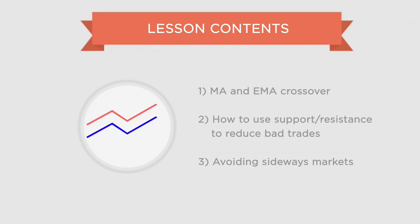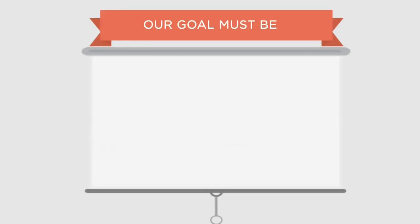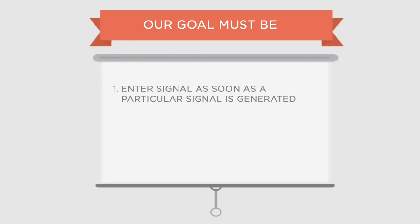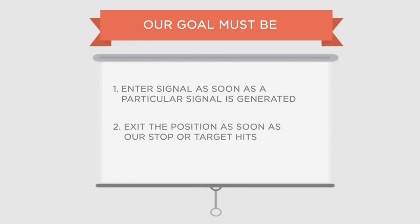Welcome to the 5th lesson of the series on moving averages. In this lesson we'll introduce you to a trading method based on the crossovers of moving averages. You'll get entry points near the support or resistance area. The goals of our trading system must be to buy or sell as soon as the signal is generated, and next you must exit the position as soon as our stop hits or our profit target hits, whichever is earlier.